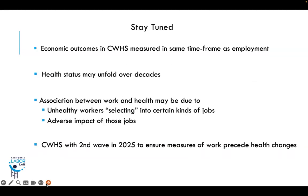Stay tuned, though: economic outcomes in the California Work and Health Survey are measured in the same timeframe as employment, so we can say poverty results from the kind of employment. But health status may unfold over decades, and the association between work and health may be due to unhealthy workers selecting into certain jobs, or being forced into them due to discrimination, or conversely due to the adverse impact of those jobs. Because health may unfold over time, the Work and Health Survey will have a second wave of data collection in 2025, so that measures of work precede health changes and we can have greater certainty about that relationship.